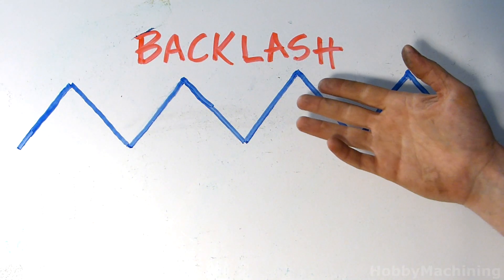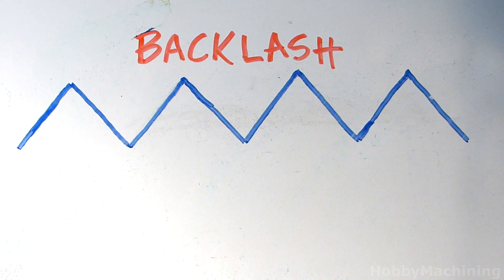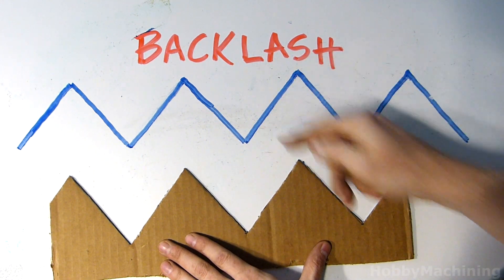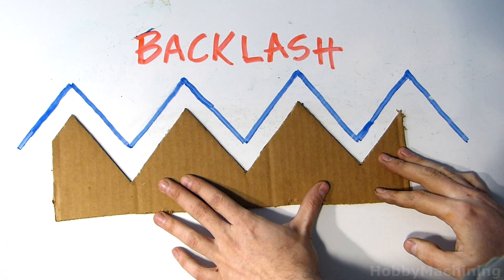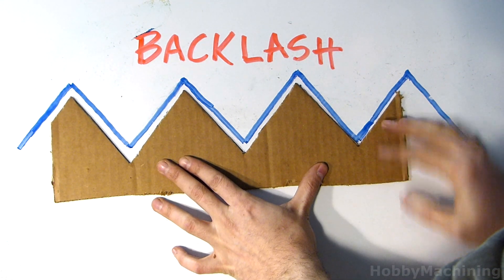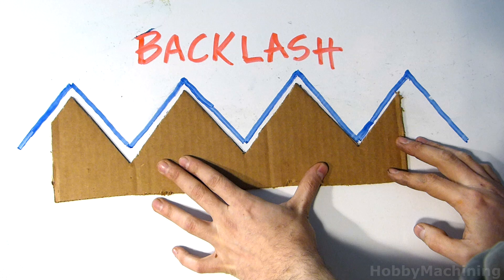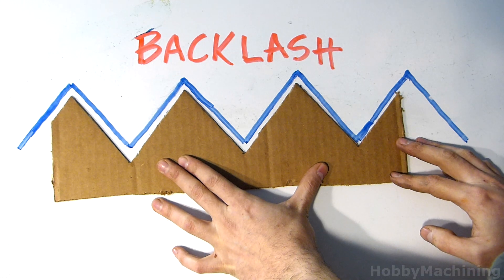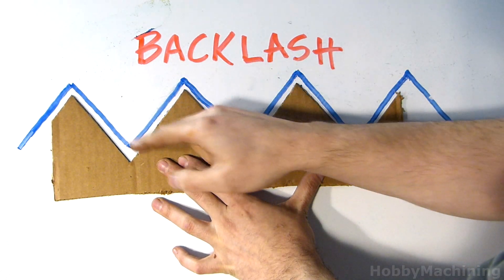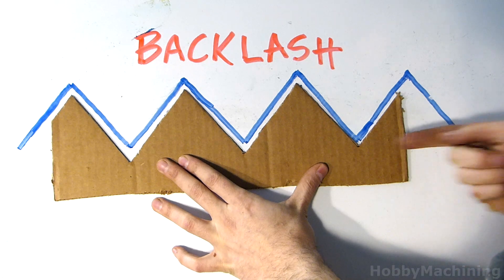The cause of backlash can be easily explained with a simple diagram. Here are some threads and here's the threads that engage. Now typically when threads engage, they don't bottom out on each other. They look something like this. So you can see that there is some clearance between the threads.